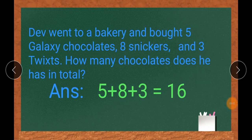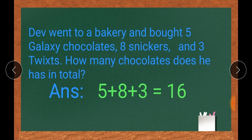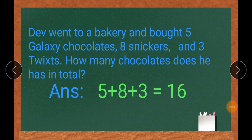Now listen to this story, children. He is a child studying third standard, just like you. One day he went to a bakery and bought 5 galaxy chocolates, 8 snickers, and 3 twix. Then we have to find how many chocolates he has in total. By adding these numbers we will get the total. But if anyone looks at the answer only, they couldn't identify what is meant by 5, what is meant by 8, or what 3 represents.